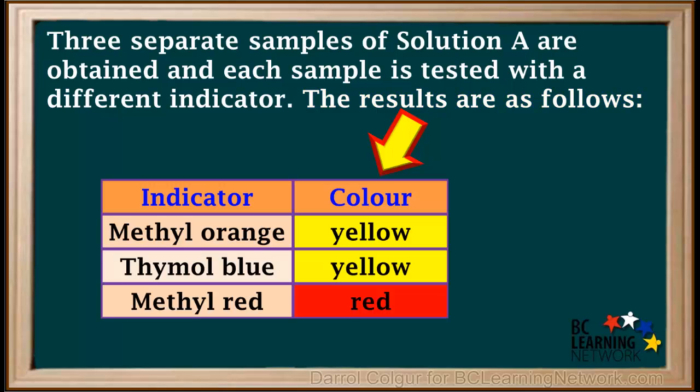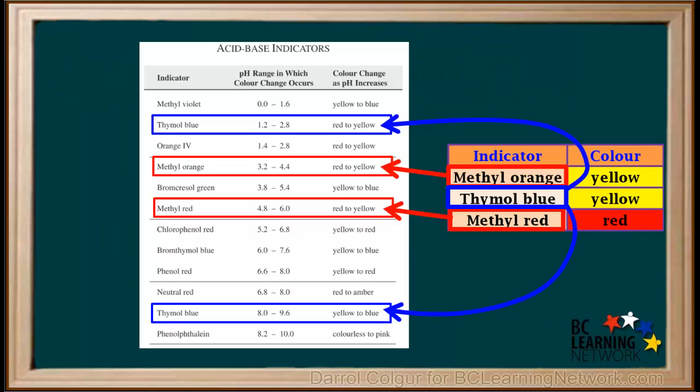Methyl orange is yellow, thymol blue is yellow, and methyl red is red. We'll locate methyl orange, methyl red, and thymol blue on the indicator table, which gives us the pH ranges of the various colors of each indicator. Notice thymol blue appears twice on this table.